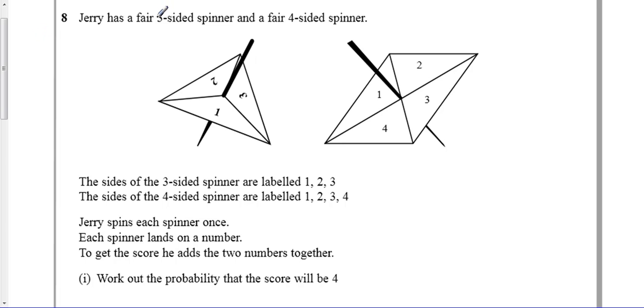Jerry has a fair 3-sided spinner and a fair 4-sided spinner. The 3-sided spinner is labeled 1, 2, and 3, and the other spinner is 1, 2, 3, 4.